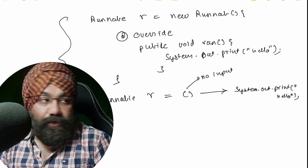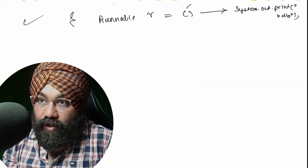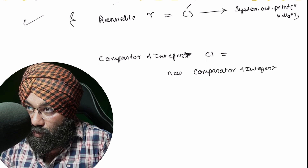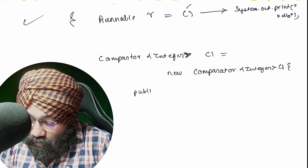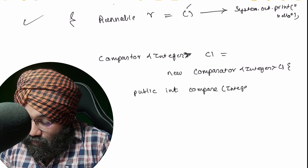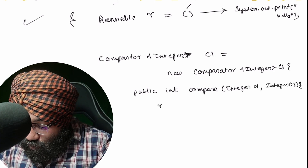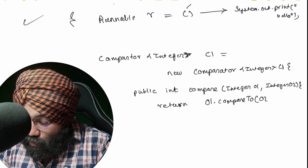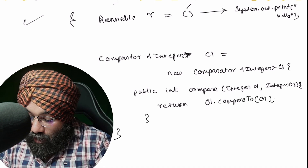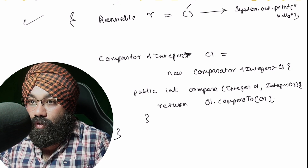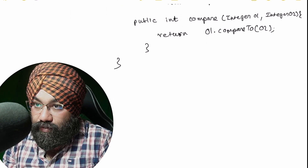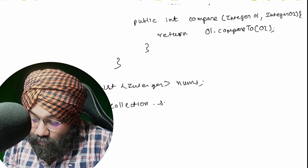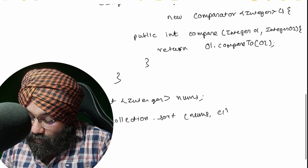Let's take one more example. If you had a Comparator for comparing two integers, you would write: Comparator<Integer> c1 = new Comparator<Integer>() and implement the compare method: public int compare(Integer o1, Integer o2), then compare and return the result — simply o1.compareTo(o2). This is how you implemented the Comparator as an inner class. You could then pass this comparator while doing comparisons, for example if you have a List<Integer> nums and want to sort it: Collections.sort(nums, c1).